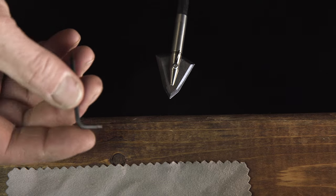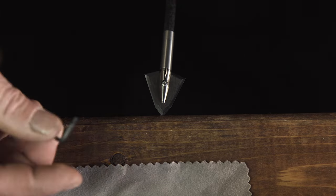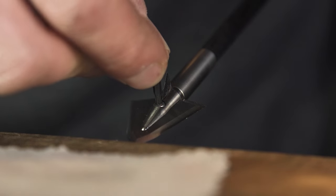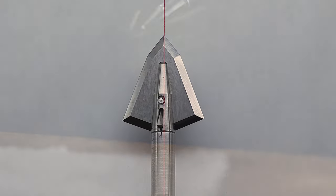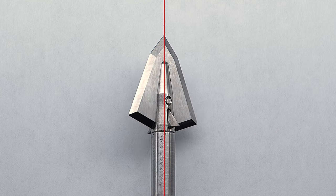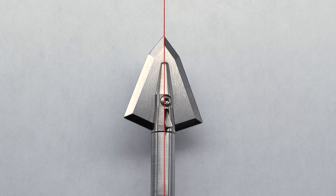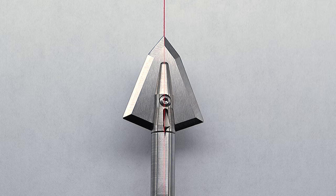When you tighten the screw, make sure the blade is seated back into the ferrule. This holds the bleeder blade tightly in place. Once you've tightened the screw, do one more check of the broadhead, rotating it back and forth, looking downward at the straight line to make sure you didn't move the blade as you tighten the screw.